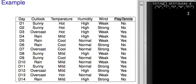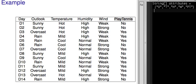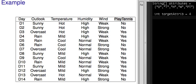These strings are for reference only. We will refer to outlook as attribute zero, temperature as attribute one, humidity as attribute two, wind as attribute three, and play tennis as attribute four. So our target attribute is number four.